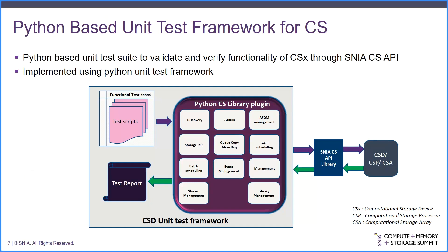Now, coming to the use cases of the Python-based CS API library. The first use case is building a unit test framework for computational storage devices, which helps validate and verify the functionalities of computational storage devices using the SNIA CS API library. This uses the Python unit test framework. The framework has test cases covering all SNIA CS API functions from both functional and non-functional test case aspects. As the spec is still a work in progress, at a high level we have 11 areas to cover in the SNIA CS API library.